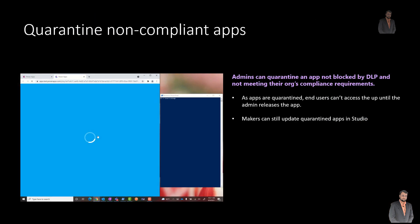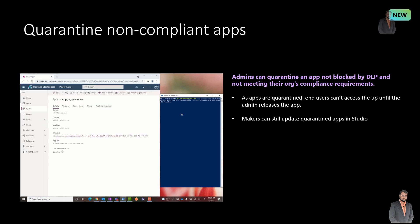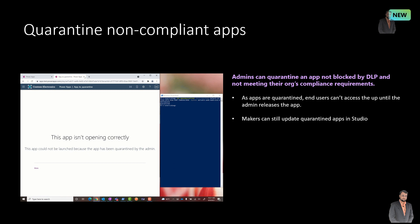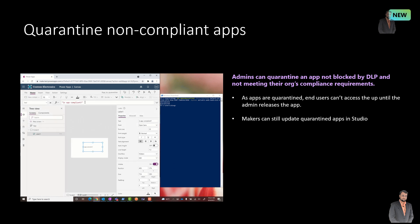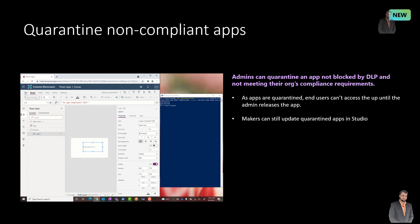The ninth important feature is that now as an admin, you can quarantine an app that is not blocked by your organization's DLP policies and is not meeting your organizational compliance requirements. This is a really cool feature. When your app is in quarantine mode, end users cannot access the app, but the maker can still update the quarantined app in App Studio. I will prepare a separate video on that very soon.